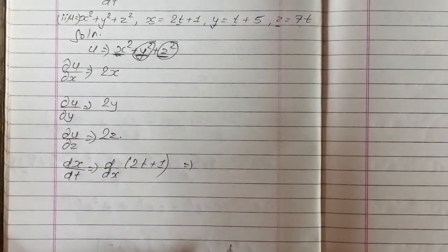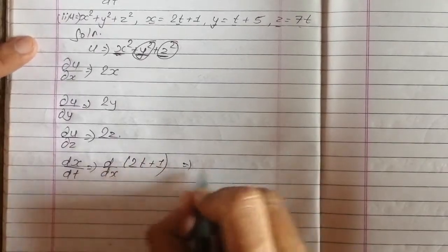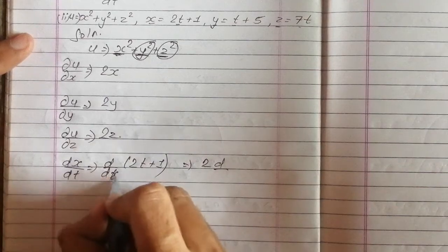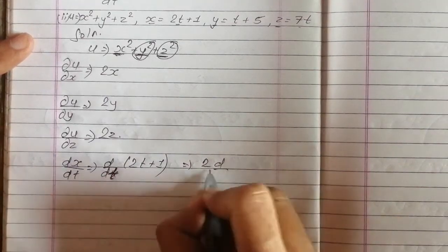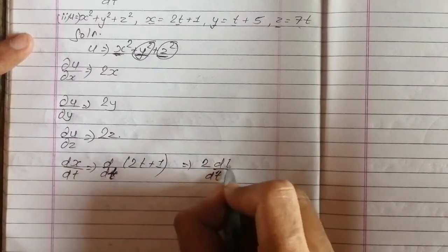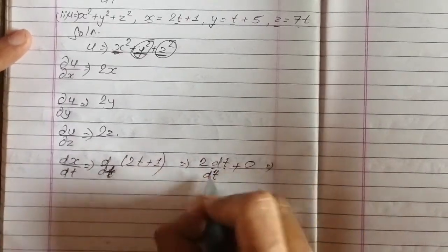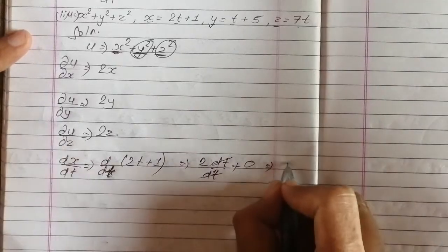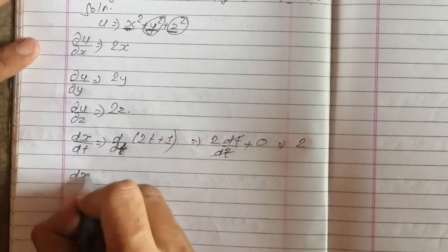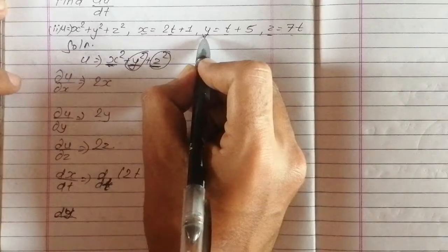If we have 2t, we will be differentiating. If we have a constant, we will be finding del t. dt: if we have t plus a constant, we will get 0. If we have 1, we will get 2. If we have 2, we will get 2.